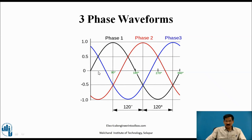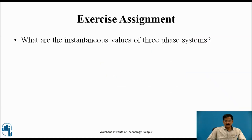The maximum voltage attained by every phase is 1.0 volt. Phase 1 attains its maximum value at 90 degrees, phase 2 attains its maximum value at 120 degrees, and phase 3 attains its maximum value at 240 degrees — meaning their maximum values are displaced by 120 degrees. Phase 1 will have its zero crossing at omega t equals zero, phase 2 (red) after 120 degrees, and phase 3 at omega t equals 240 degrees.